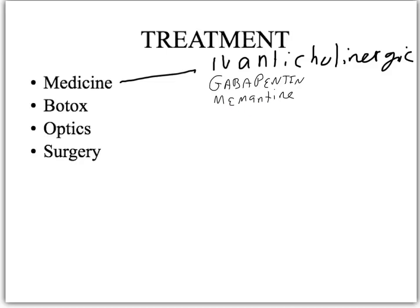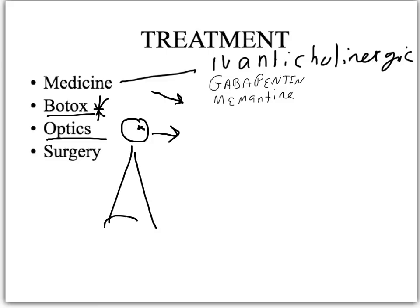For pendular nystagmus, IV anticholinergics, gabapentin, and memantine are the main treatments; some other treatments are anecdotal and require more study. In both types, you can botox the muscle causing the problem — though a good majority of patients who receive this treatment do not repeat it when the botox wears off. Optically, a device can track eye movement and adjust a prism to maintain a stable field of gaze regardless of where the eye is, preventing vision problems.